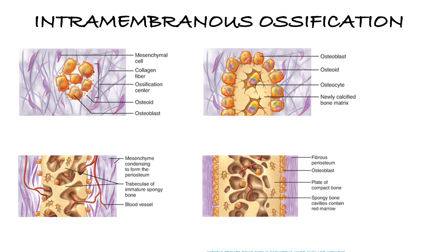The second type is intramembranous ossification. In this process, we are not going to use cartilage as our mold or model. In the first step, we see the ossification center developing in the fibrous connective tissue. Bone is a connective tissue, so we start with fibrous connective tissue. The mesenchymal cells — also known as stem cells — start to cluster and differentiate into osteoblasts. Osteoblasts are bone-building cells, and they form an ossification center.